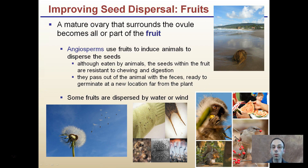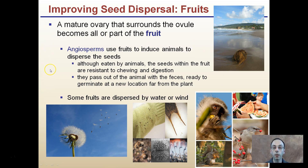Improved seed dispersal comes through fruits. Fruits are a great adaptation for dispersing seeds — a mature ovary surrounds the ovule and becomes all or part of the fruit. In angiosperms, fruits induce animals to disperse seeds. Although eaten, seeds within the fruit are resistant to chewing and digestion; they pass out in the animal's feces, ready to germinate at a new location. This is partly why farmers add manure to fields.